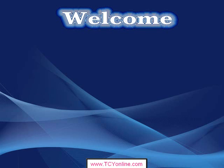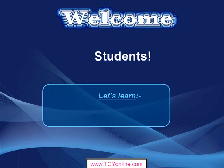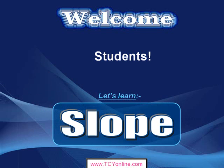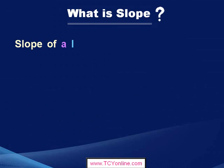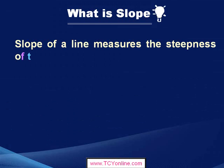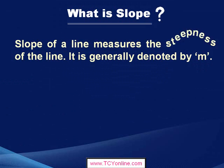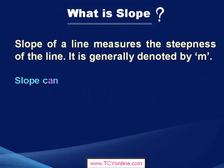Welcome students. Today, let's learn how to measure the slope of a given straight line. Let's look at the meaning of the term slope. Slope basically measures the steepness of the line, and we denote this by the letter M.